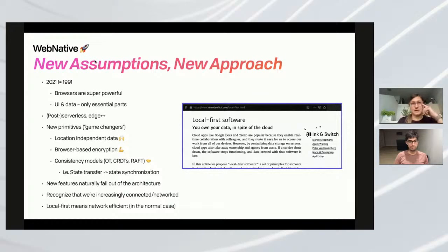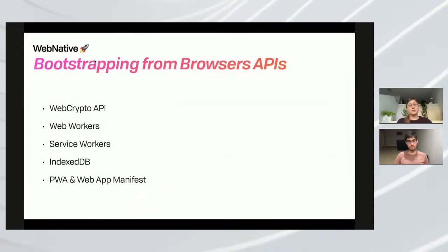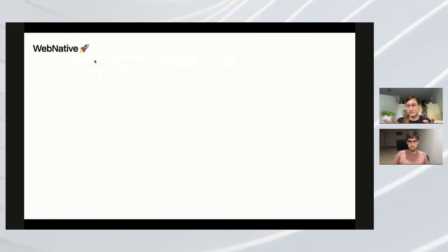We have new primitives: location-independent data, browser-based encryption, and new consistency models like CRDTs and Raft. The overall picture is going from REST — state transfer — to state synchronization, where we have different views of data and want to make those look the same. New features naturally fall out of this architecture. We're talking about progressive login where you can do 100% of everything in the application except distribute your changes to people not currently online. Everything's offline first and encrypted at rest. The main technologies we're using: WebCrypto API, Web Workers, Service Workers, IndexedDB, and PWAs.